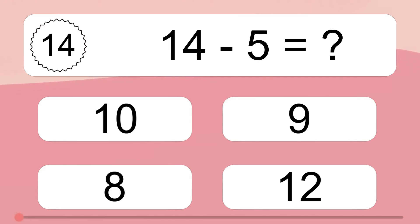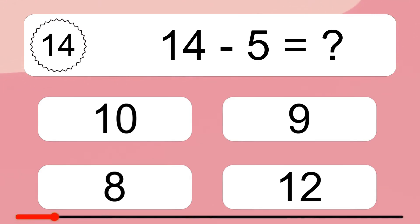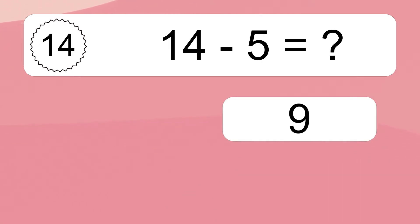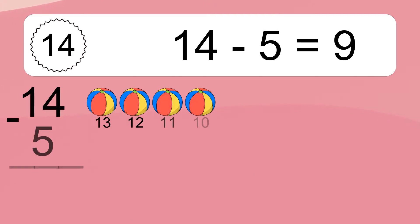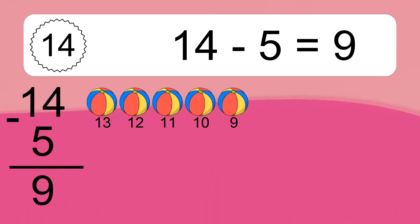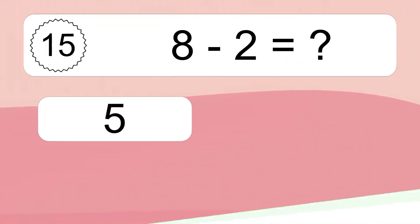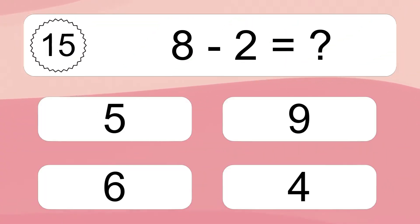14 minus 5 equals what? 14 minus 5 equals 9. Let's count it: 13, 12, 11, 10, 9.